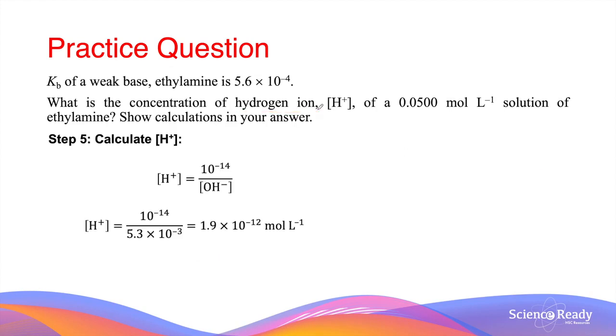Using what we know about the self-ionization of water, at 25 degrees, the concentration of hydrogen ions when multiplied by the concentration of hydroxide ions gives us 10 to the minus 14. The concentration of hydrogen ions can be calculated by dividing this by the concentration of hydroxide ions that we previously calculated. This gives us the final answer of 1.9 times 10 to the minus 12 mol per liter.